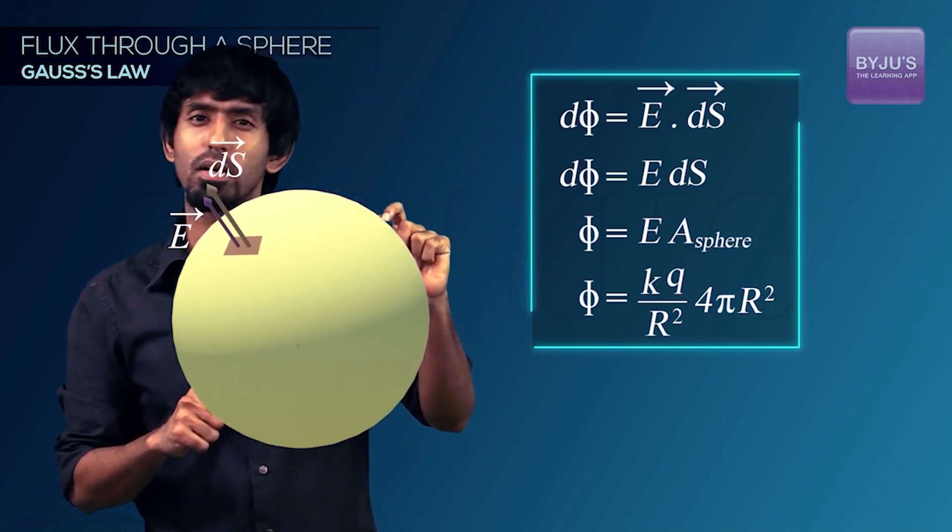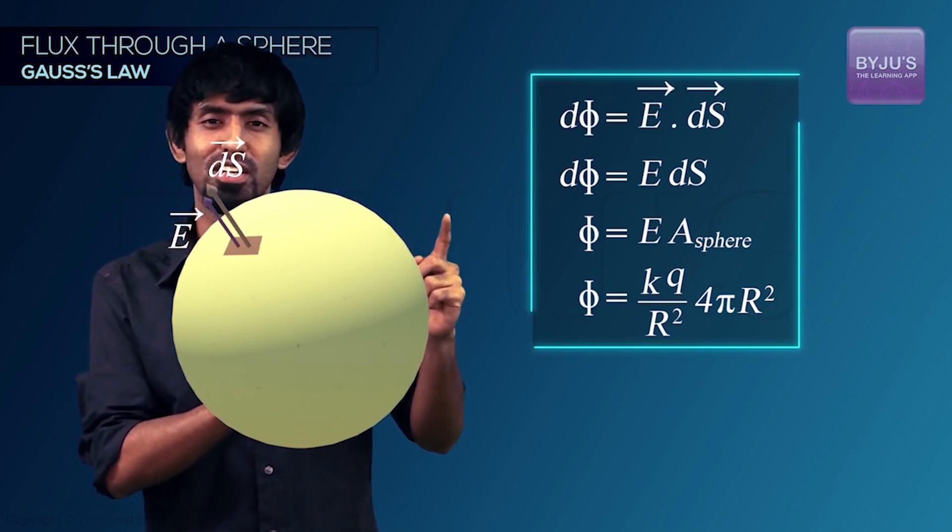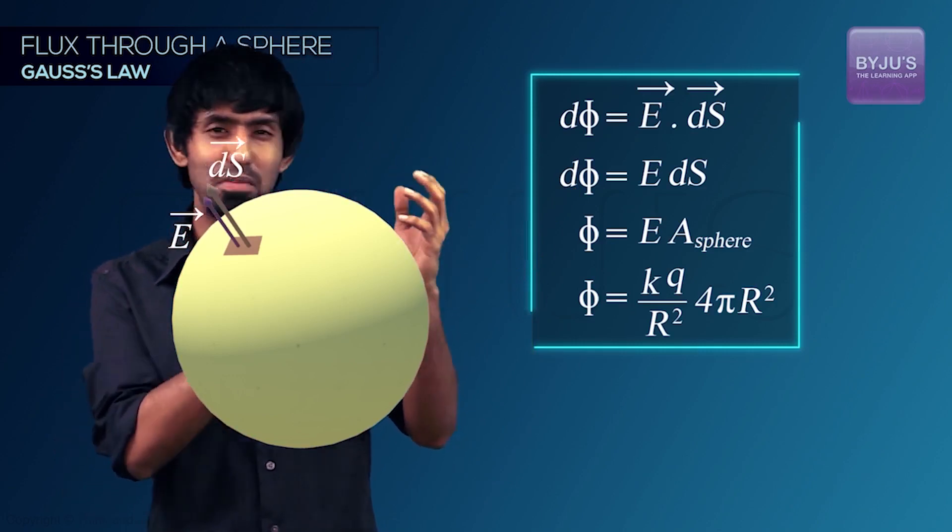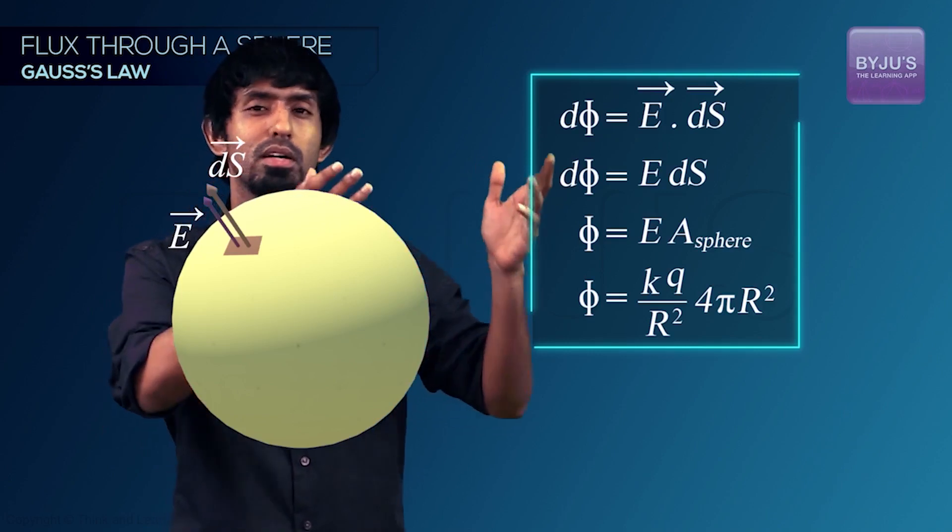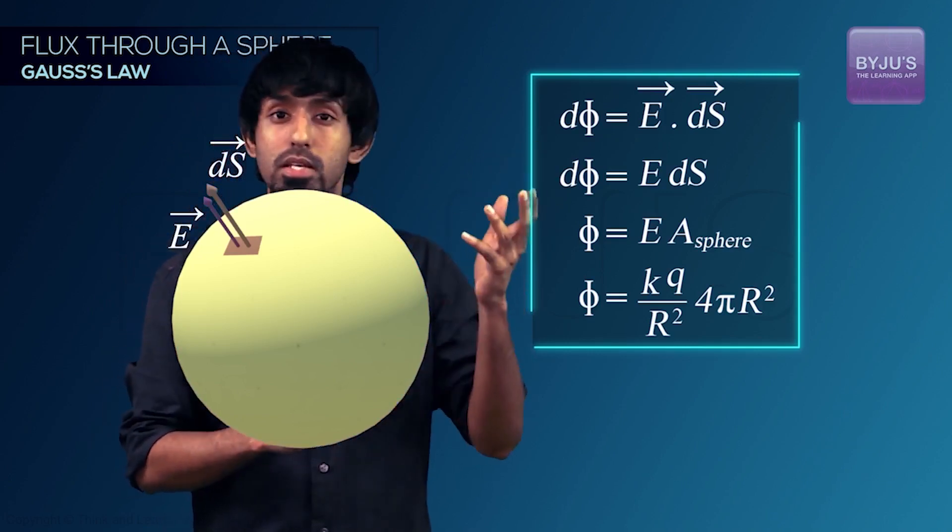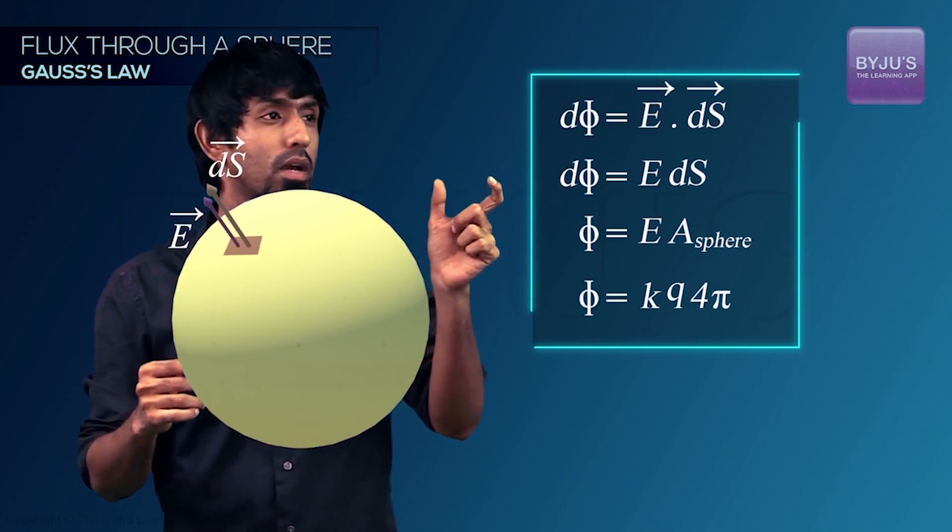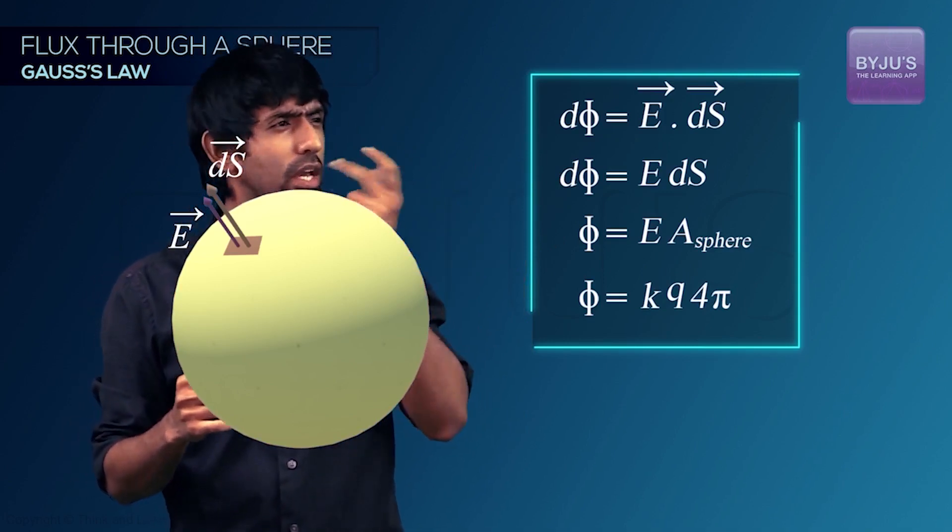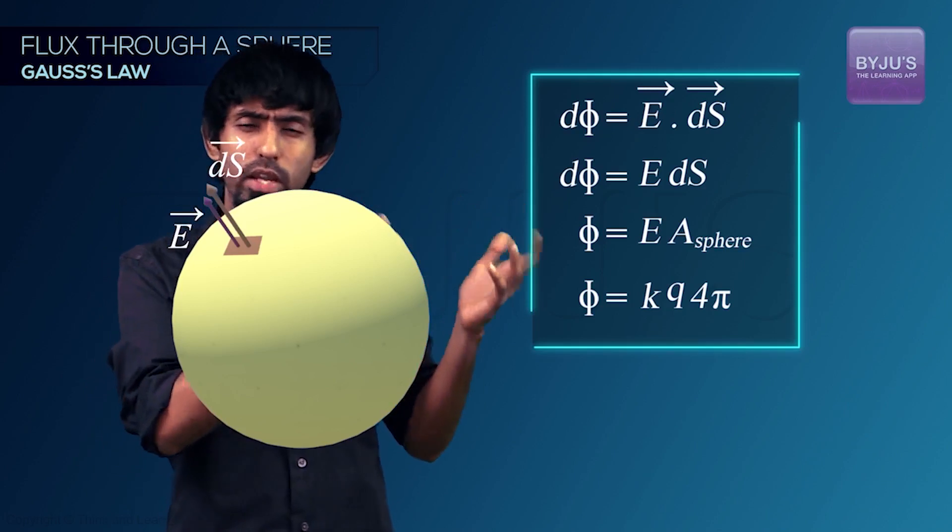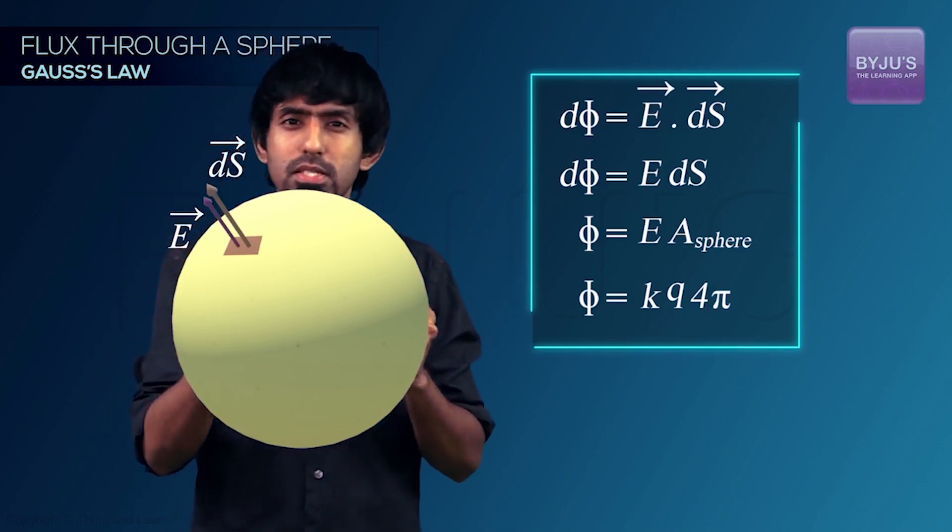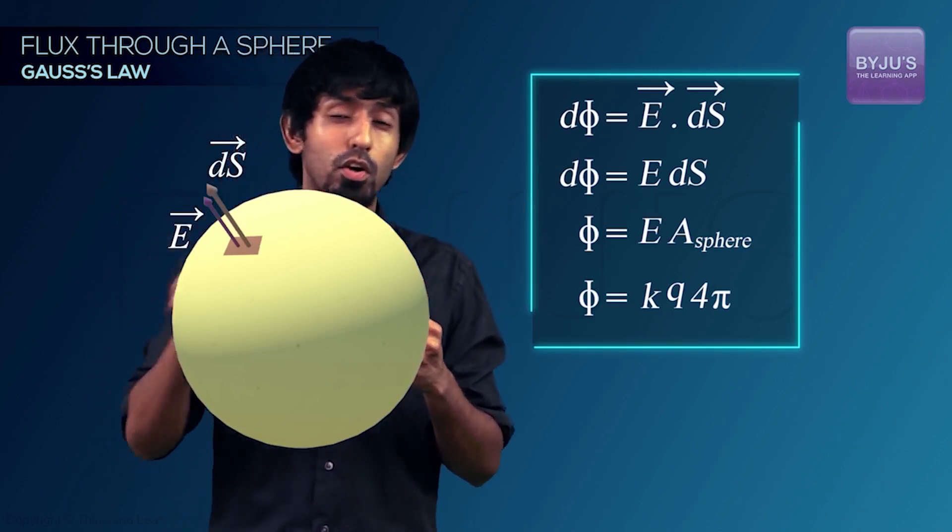Now observe something. Have you already observed it? Some very important variable is going away. What's going away? The radius of the sphere is going away. So you have KQ into 4π as your answer. KQ into 4π has nothing to do with your radius of the sphere, which means that whatever radius you've taken, you've got the same answer.